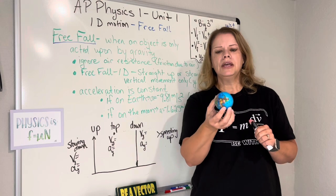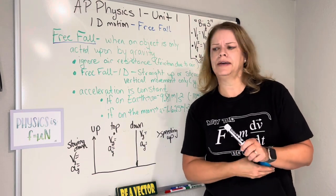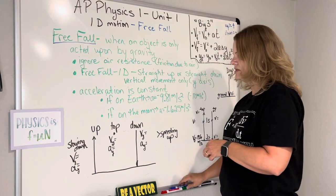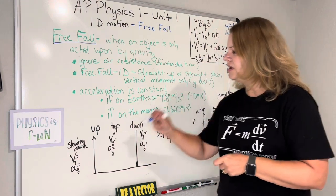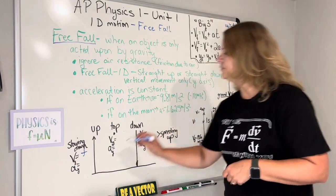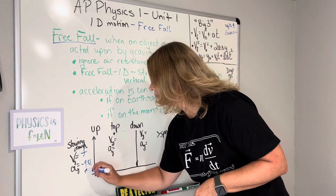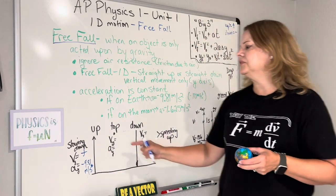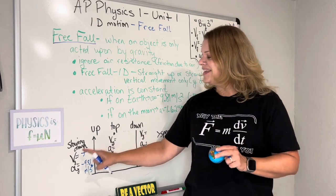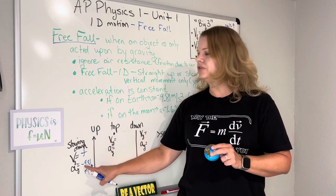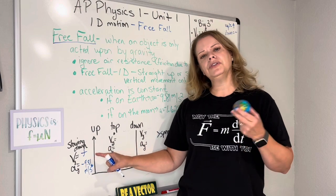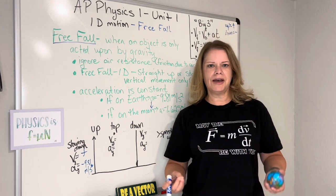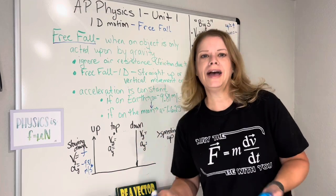As the ball goes up, it is slowing down. We've defined up as positive, so velocity is positive. But acceleration is always negative 9.81 meters per second squared. If your velocity is positive and you're slowing down, then your acceleration is negative — these refer to directions, and acceleration is in the opposite direction of velocity. It's pointing down. The earth is always pulling you down, just like the John Mayer song Gravity — gravity is pulling you down.